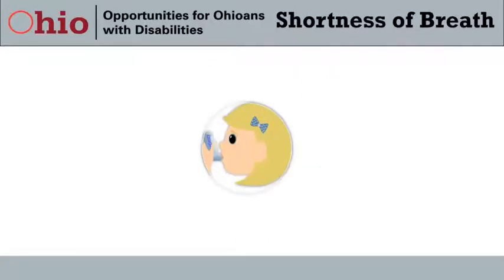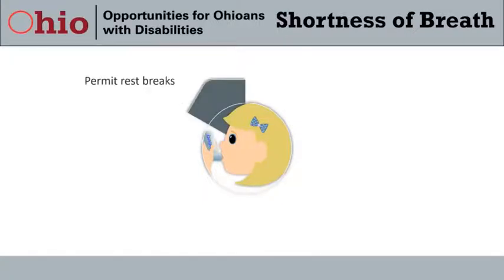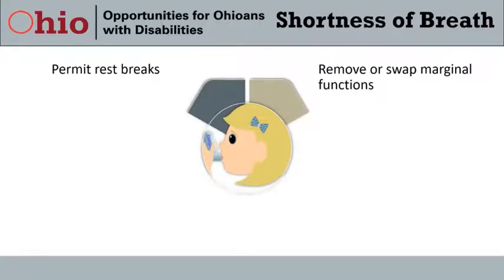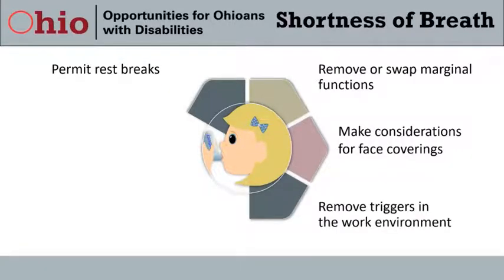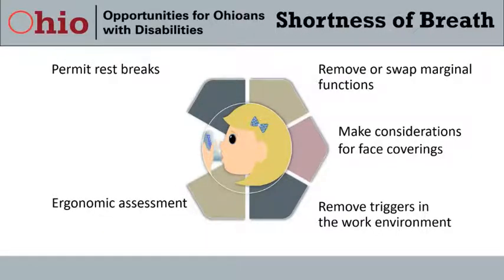For shortness of breath, some accommodations can overlap with those for aches and pains, like permitting rest breaks and removing or swapping marginal functions. Additional ideas include making considerations for face coverings — such as permitting the employee to remove the face covering when appropriate or providing an alternative mask — looking for ways to remove triggers in the work environment, and reducing physical exertion through an ergonomic assessment. It's also important to create a plan of action to handle any sudden bouts of shortness of breath to assure the safety of the employee.